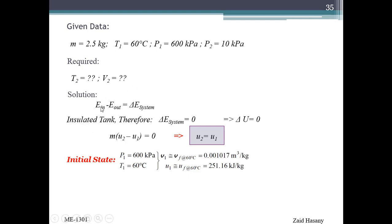We need the final temperature of the whole tank and the total volume. Since delta E in minus E out equals delta E system, and the tank is insulated, there is no energy transfer. E in minus E out is zero, so delta U equals zero, which means U2 equals U1.